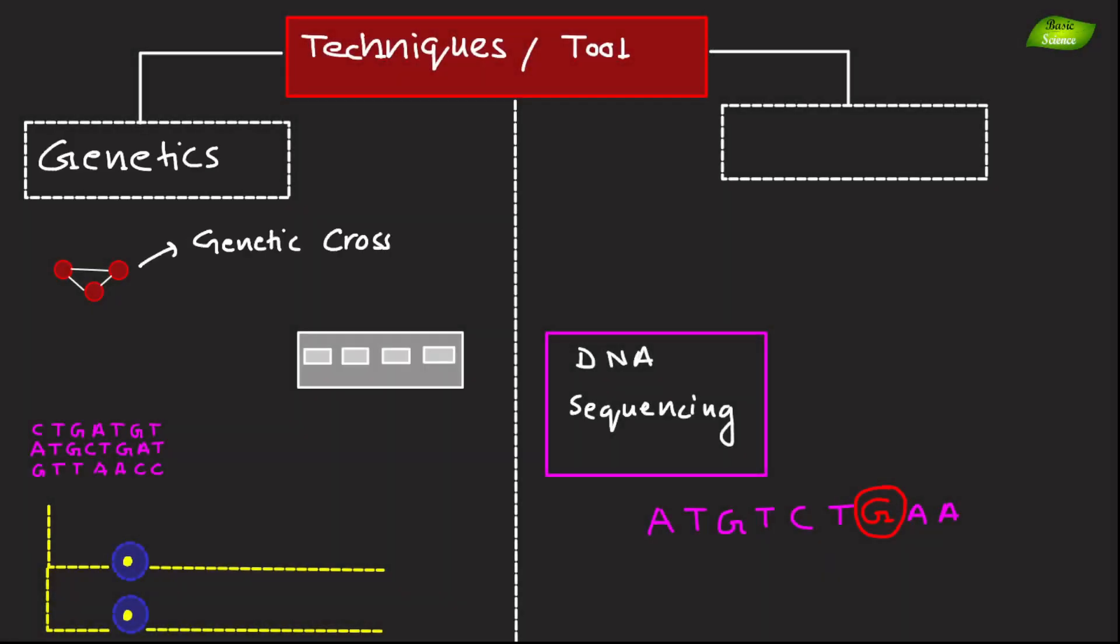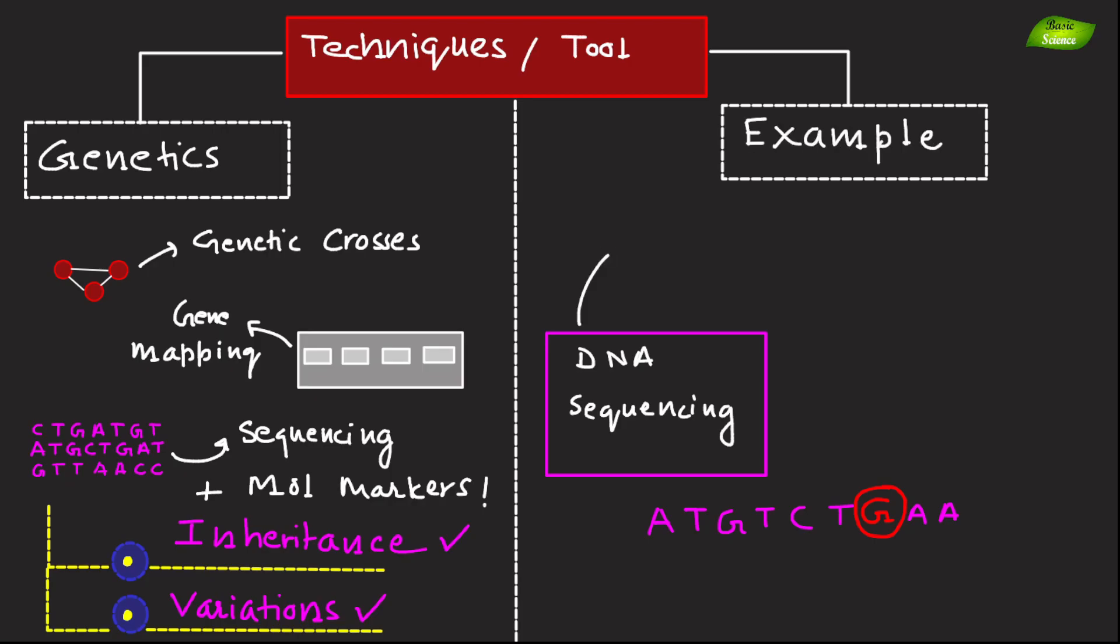Genetics utilizes genetic crosses, gene mapping, genome sequencing, and molecular markers to study inheritance patterns and genetic variation. An example includes genome sequencing to identify genetic mutations associated with diseases and develop personalized medicine strategies.